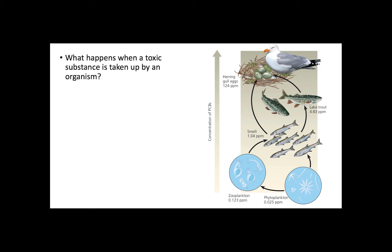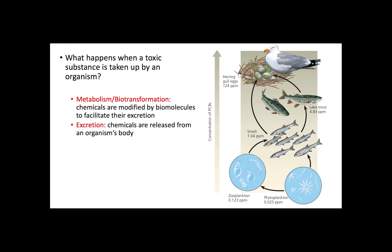One way in which organisms deal with toxic chemicals is through metabolism or biotransformation. This means that certain biomolecules, like proteins, can modify the chemical structure of the substances and facilitate their excretion. Excretion is another way of dealing with chemicals, and this can happen after a substance has been metabolized, or for substances that do not undergo metabolism.